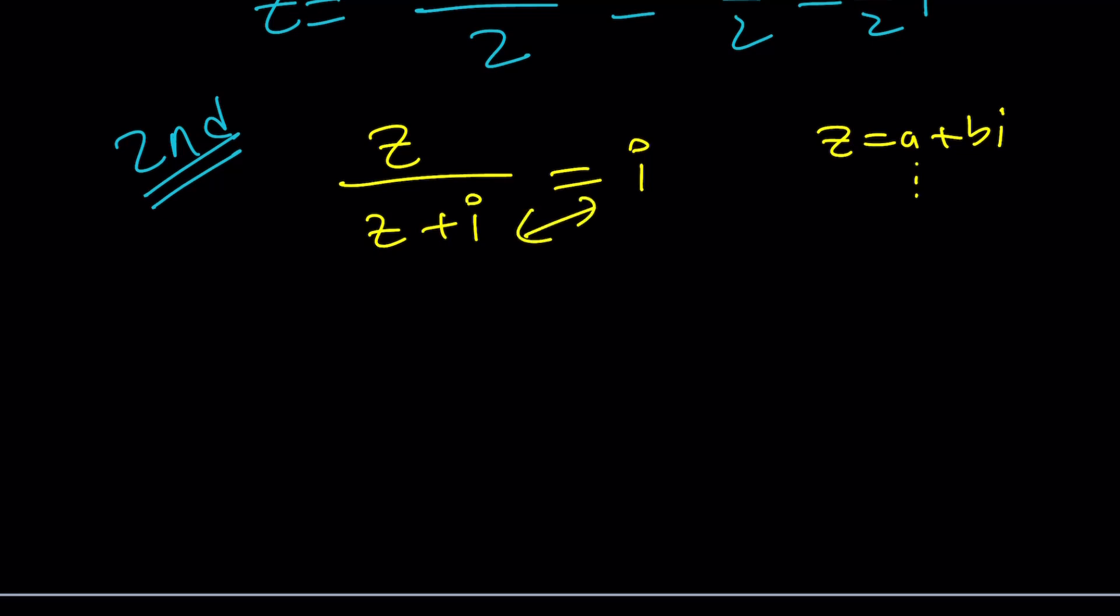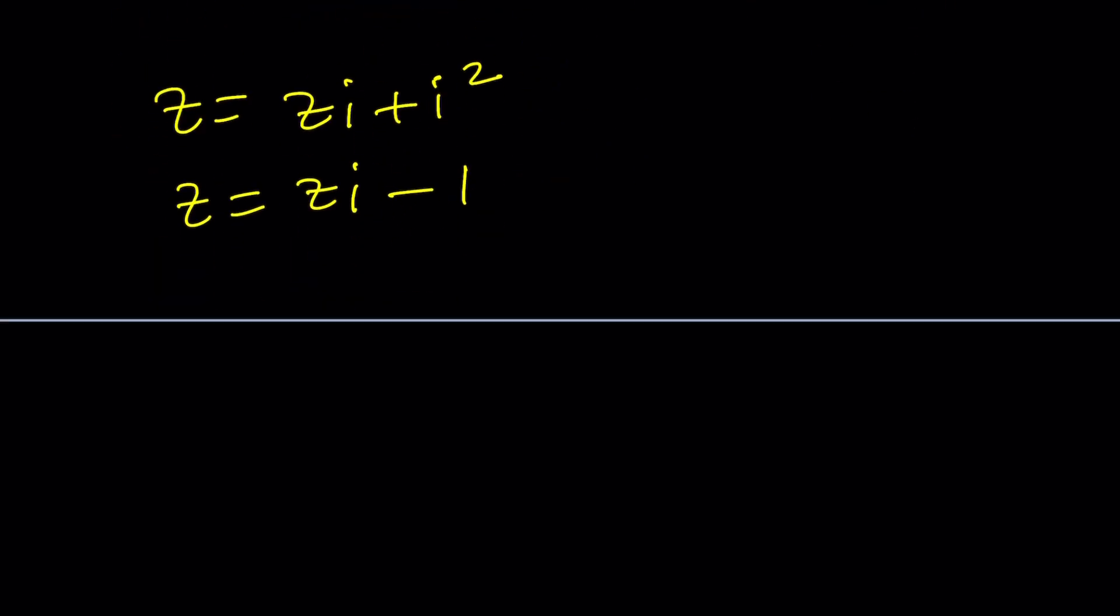So cross multiply Z equals ZI plus I squared. And then I squared is negative one. So Z equals ZI minus one. And since I'm trying to solve for Z, let's subtract ZI from both sides. If you don't want to leave the negative one alone, you can subtract Z from both sides and add one. Kind of like the same idea.